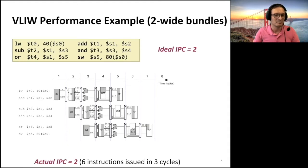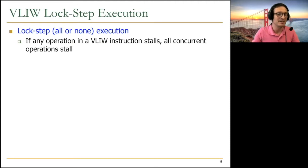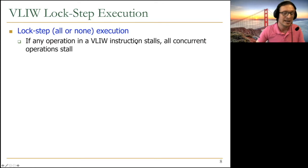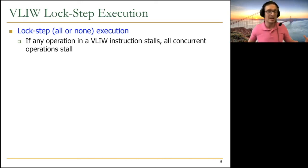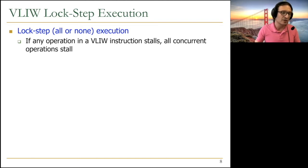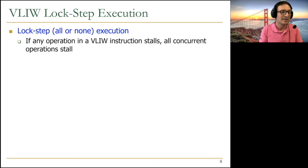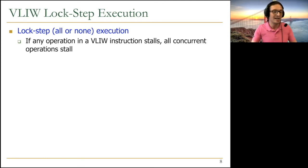Lockstep execution means all or nothing: if any operation in a VLIW instruction stalls, all concurrent operations need to stall. The machine treats the bundle as a unit — instructions flow through without being broken into pieces. This leads to performance issues: if a load takes 100 cycles while other instructions are single-cycle adds, all those independent adds must wait 99 extra cycles. Compilation mechanisms have been developed to minimize this cost.